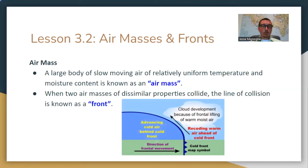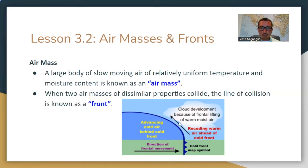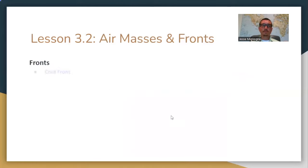Let's get into air masses and fronts. A large body of slow-moving air of relatively uniform temperature and moisture content is known as an air mass. When two air masses of dissimilar properties collide, the line of collision is known as a front. In a cold front, advancing cold air pushes warm air upward — warm air likes to rise — and that frontal lifting of warm, moist air creates cloud development. Cold fronts are denoted by a blue line with blue arrows; warm fronts by a red line with red arrows.